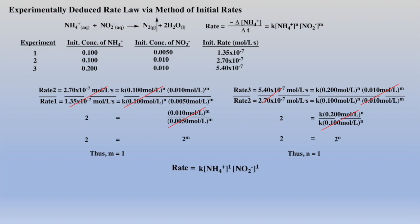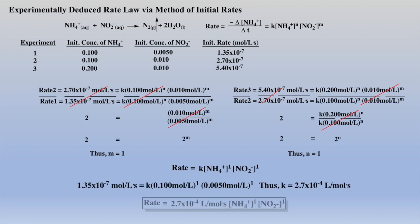Now let's deduce the rate constant by substituting data from experiment one into our rate law. We can now rewrite our experimentally deduced rate law with the rate constant and the order for each reactant. It should be noted that the exponents — the order — were experimentally determined. M and N were determined experimentally; they were not obtained from the stoichiometric coefficients of the balanced equation. Although sometimes the experimentally determined order and stoichiometric coefficients of the balanced equation may match, as is the case in this example, but remember this is just a coincidence.